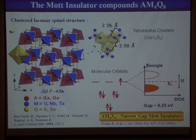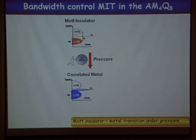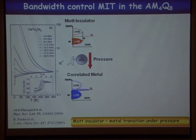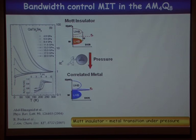To verify Mott insulator behavior under pressure: the group of Dürichen showed that GaV₄S₈ undergoes a pressure-induced insulator-to-metal transition — resistance changes from insulating to metallic behavior — and even becomes superconducting at low temperature. This is a first hint of bandwidth-controlled metal-insulator transition, though it could also involve another type of phase transition, so it is not yet conclusive proof.